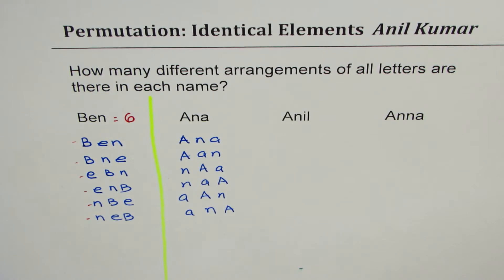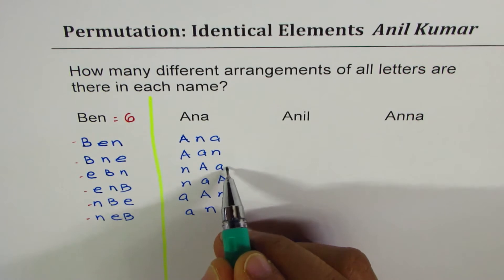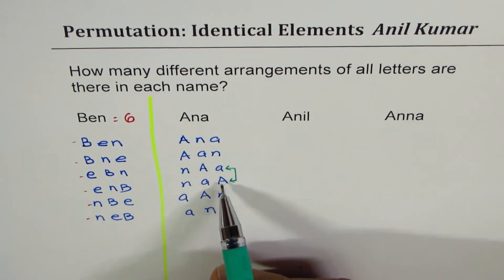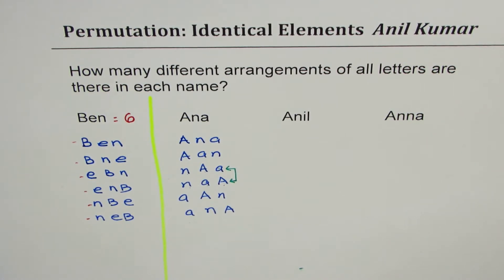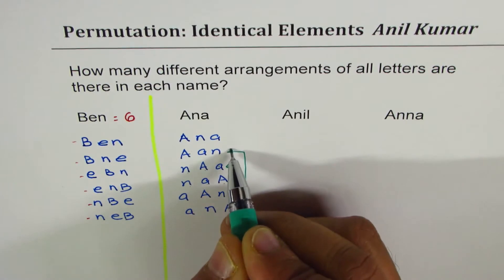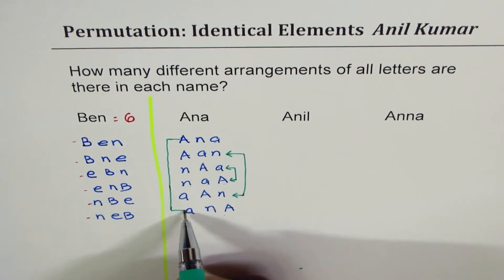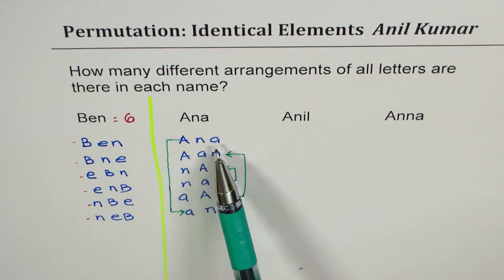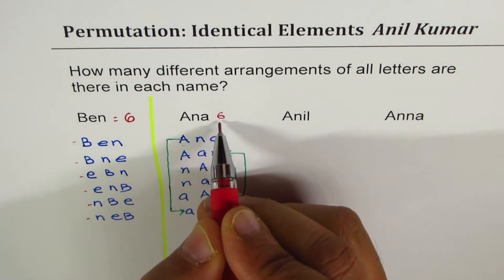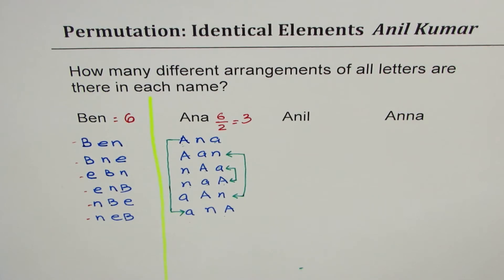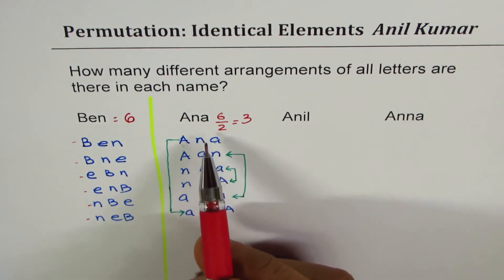However, you will notice that couple of them are duplicate names. For example, these two are same. Whether it is lowercase or uppercase, it is N, A, A. So they are duplicate. Should we count them as two? Not really. It's just one. Can we look for more duplicate names? Yes, we can. AA, so that means here also we have a duplicate name. And the first one and the last one. What we notice here is that we have three duplicate names. They are same things. Whether I write lowercase or uppercase, it is the same word.